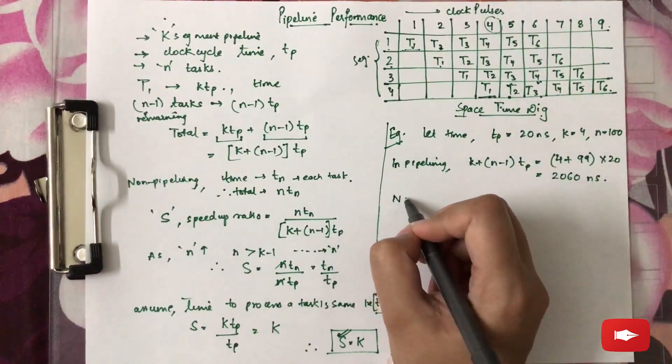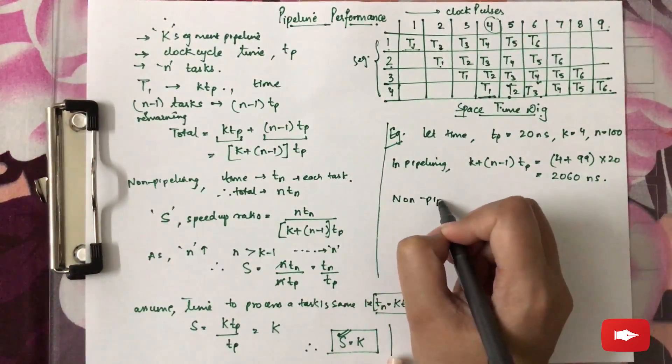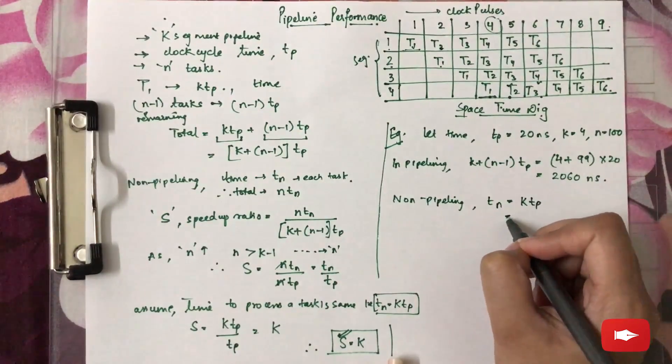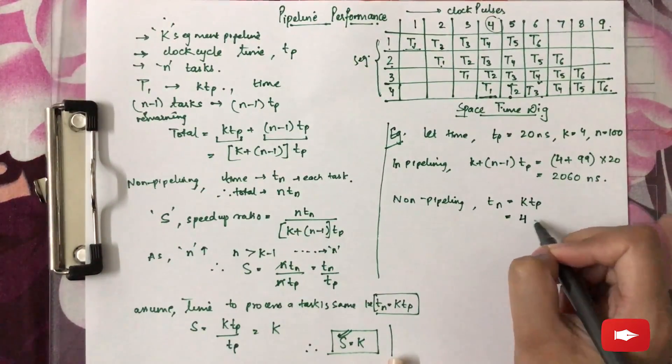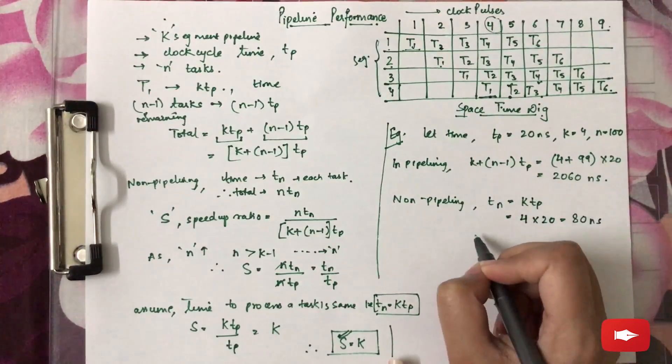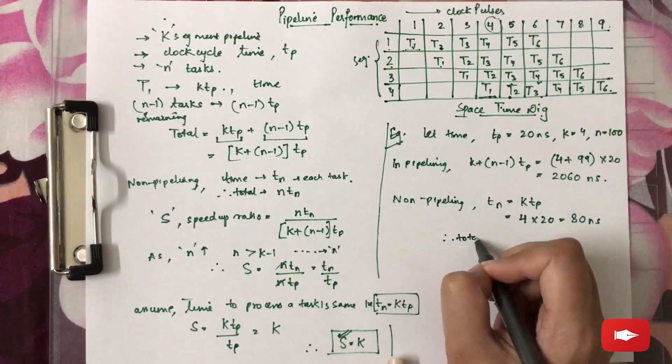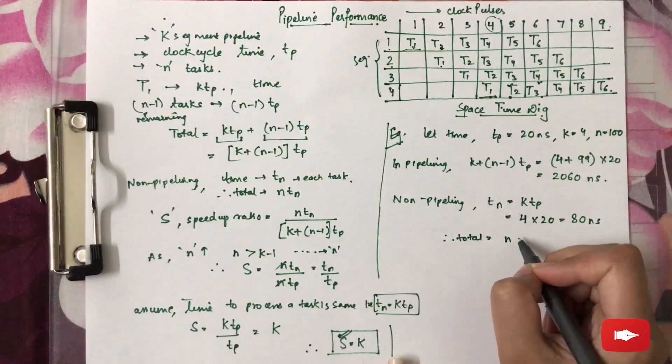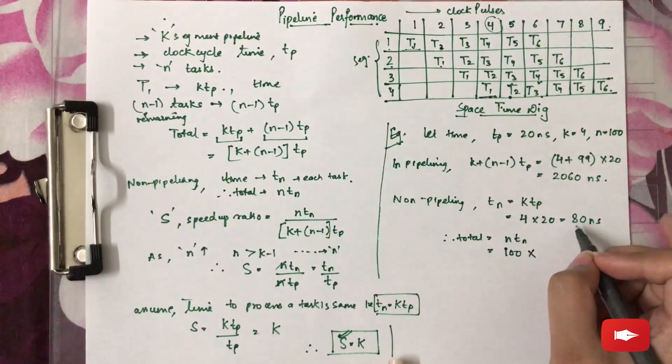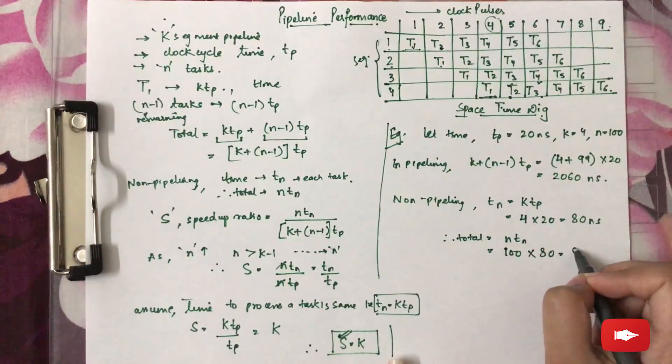Now for non-pipelining, we assumed TN equals KTP, which will be equal to 4, and TP is 20, which will be 80 nanoseconds. Because total time is N×TN, which will be 100 into 80, equals 8000 nanoseconds for all 100 tasks.